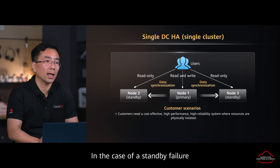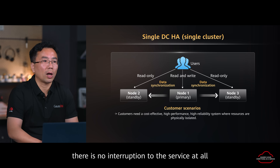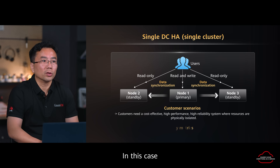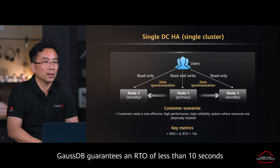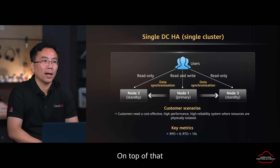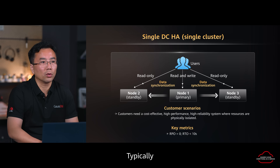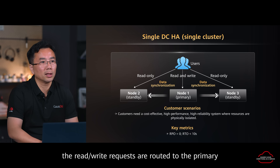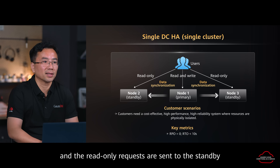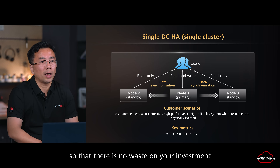In the case of standby failure, there is no interruption to the service at all. GaussDB guarantees an RTO of less than 10 seconds. On top of that, the workload load balancer can automatically route requests between the primary and standby. Typically, read-write requests are routed to the primary and read-only requests are sent to the standby, so there is no waste on your investment.